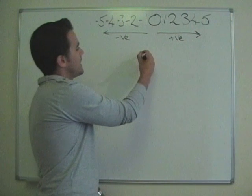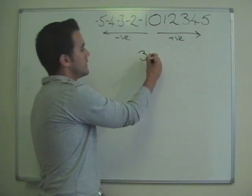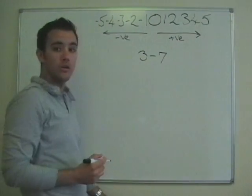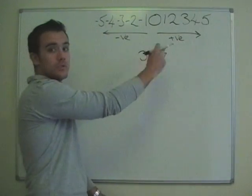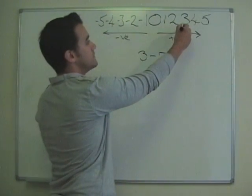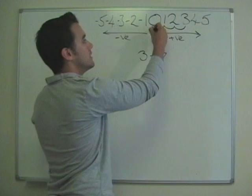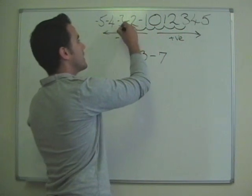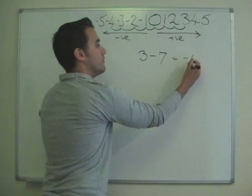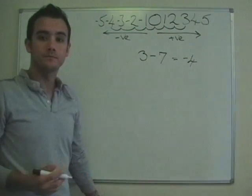So if we've got, say, three take away seven, okay, we know we're taking away, so we're moving in the negative direction. So we just go from three and we move seven places, so we go one, two, three, four, five, six, seven, and we end up at minus four.